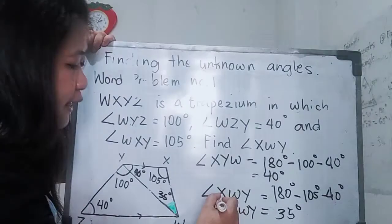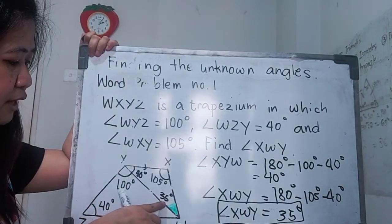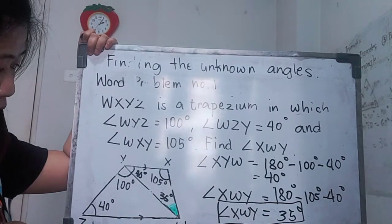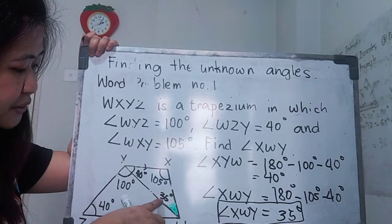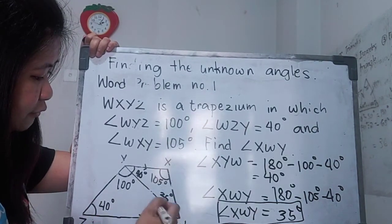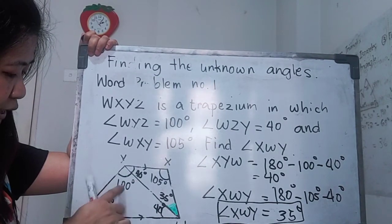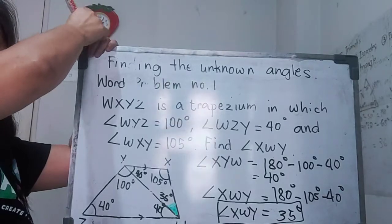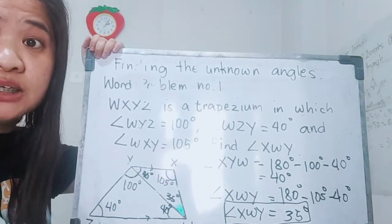Let's check. 105 plus 35 equals 140. And 100 plus 40 plus 40 equals 180. So that means we got the answer correctly. If you have questions, you may post them on our Google Classroom. Let's continue with word problem number two.